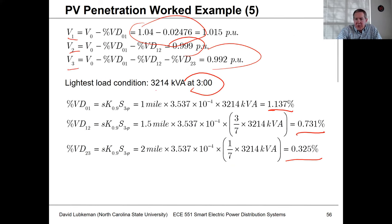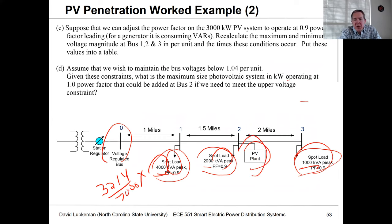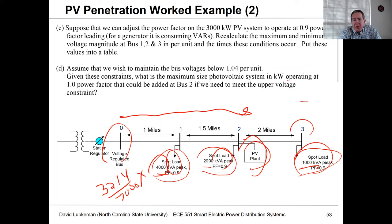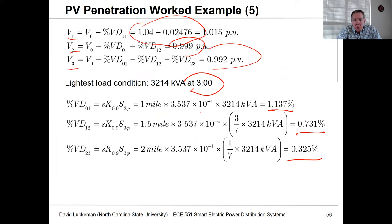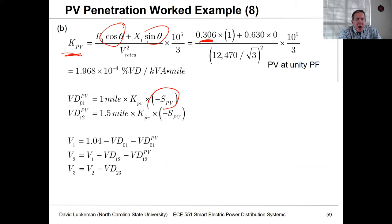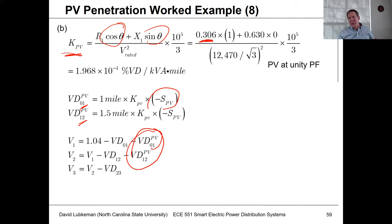With PV at bus number two, the current associated with the PV flows through sections 0-1 and 1-2. It doesn't cause a voltage boost across section 2-3, although the load at bus 3 does see the impact from the rise in voltage on sections 0-1 and 1-2. With one mile from 0 to 1 and 1.5 miles from 1 to 2, you plug in the PV value. Since this is linear, you can superimpose the impact of the PV on top of the original loading condition without starting from scratch.